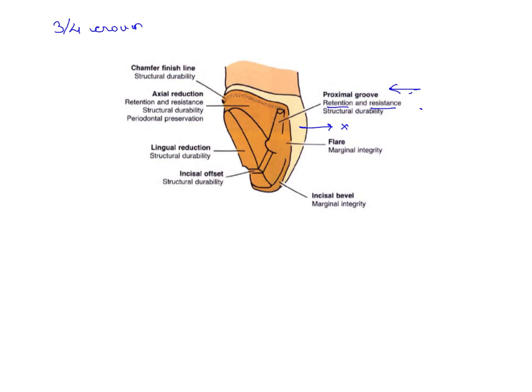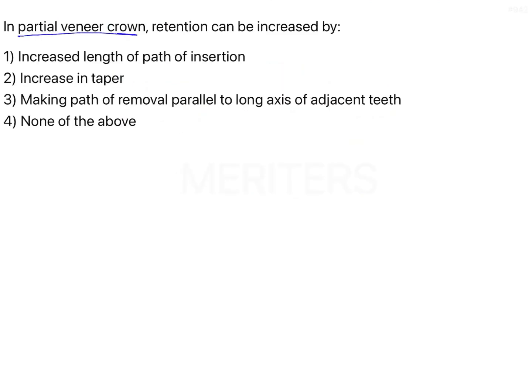You don't want to prepare too much and give too much taper, otherwise the crown is not going to sit in its place. If you are talking about a partial veneer crown, the retention can be increased by the first option—increasing the length of path of insertion. If you have a longer path of insertion, that means it is more retentive.